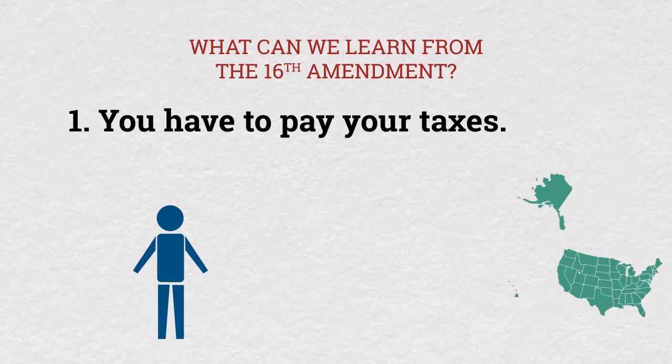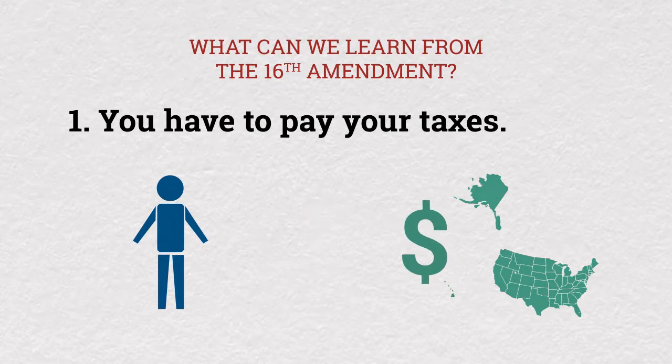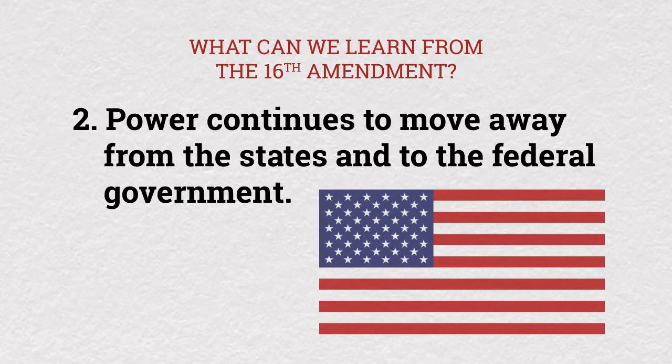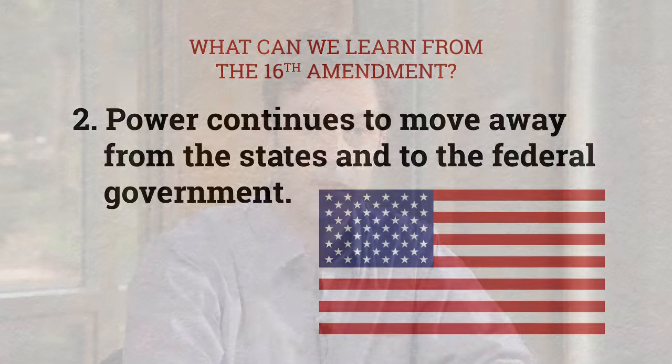What can we learn from the 16th Amendment? One, you have to pay your taxes. Two, the 16th Amendment continues the general pattern of our constitutional history. Power moves away from the states and to the federal government. This happens when we move from the Articles of Confederation to the Constitution. It happens again more dramatically with Reconstruction, and it happens on a smaller scale more or less continuously. The 16th Amendment means that the federal government is going to have more money, and with that money comes power.